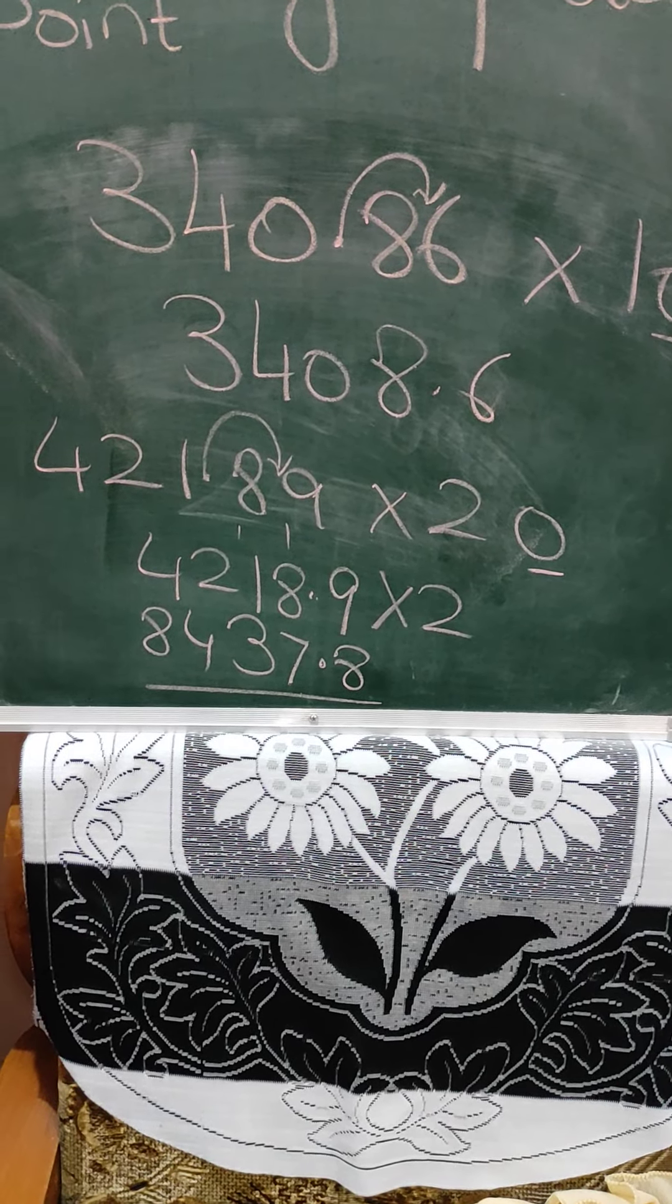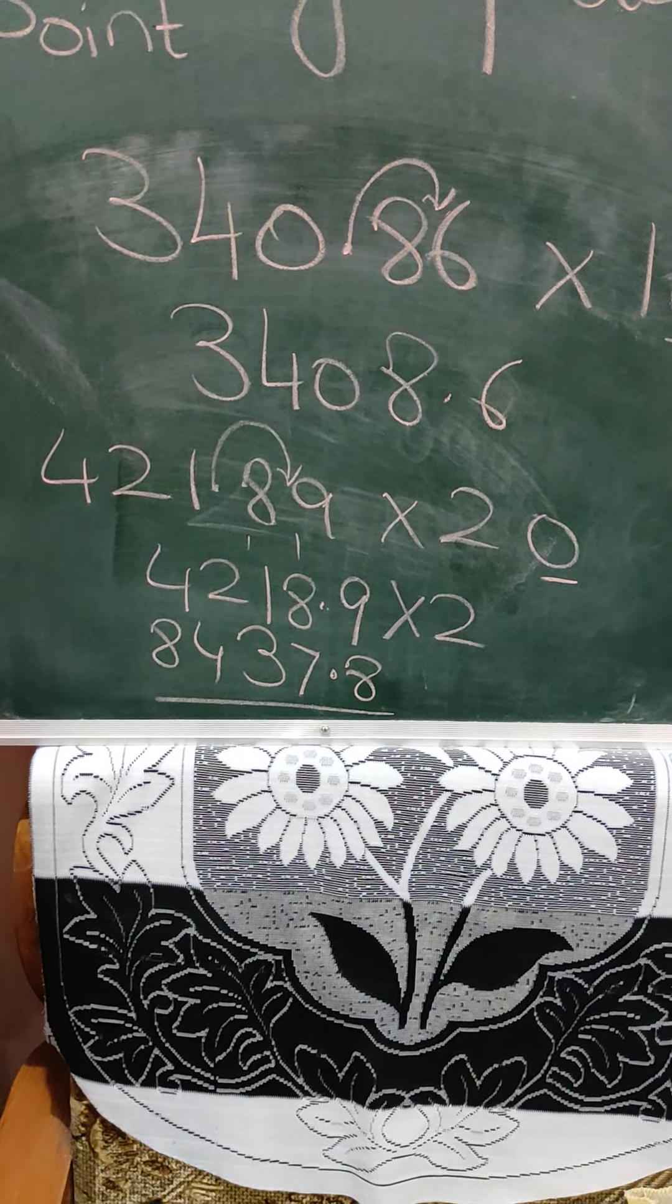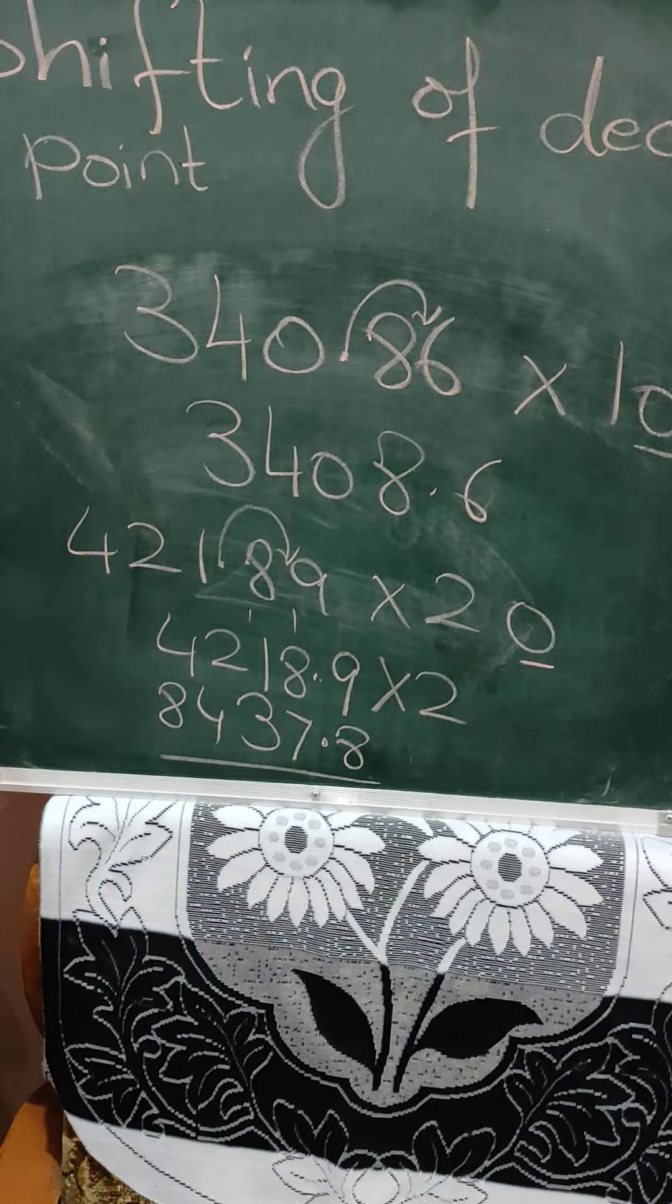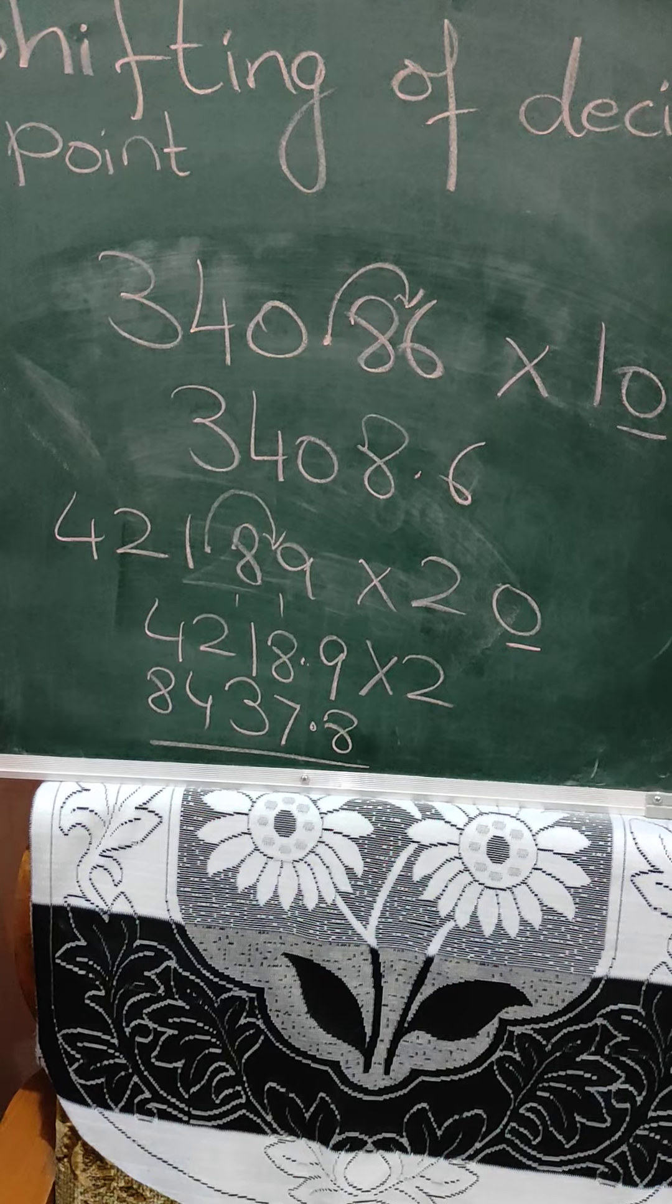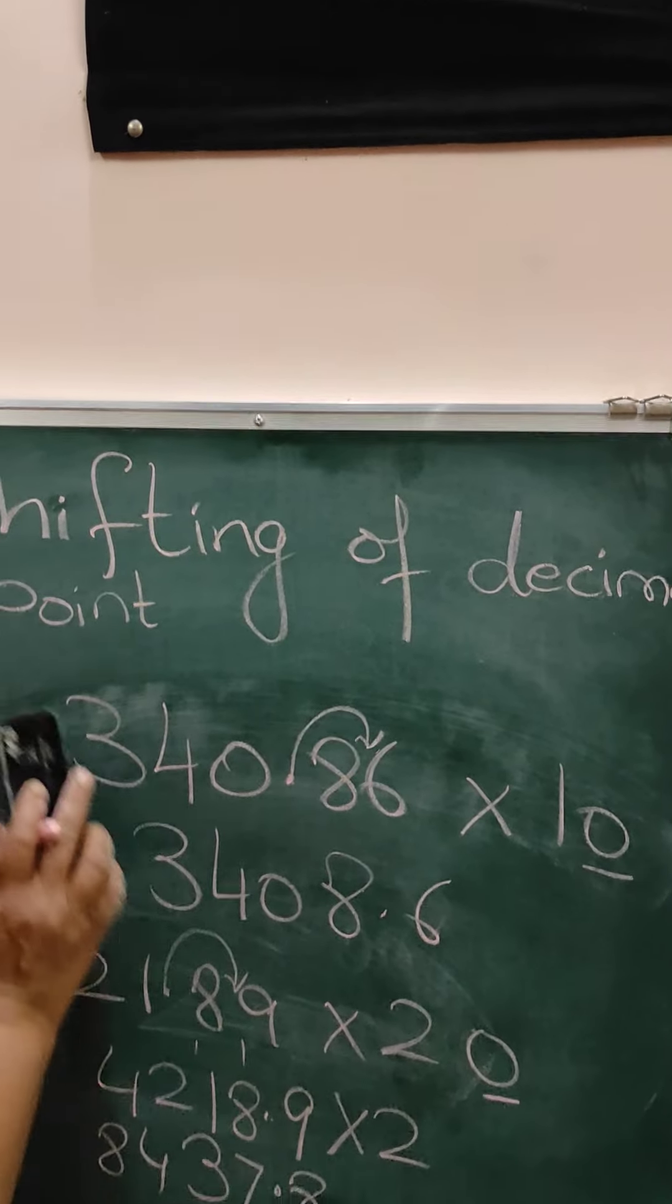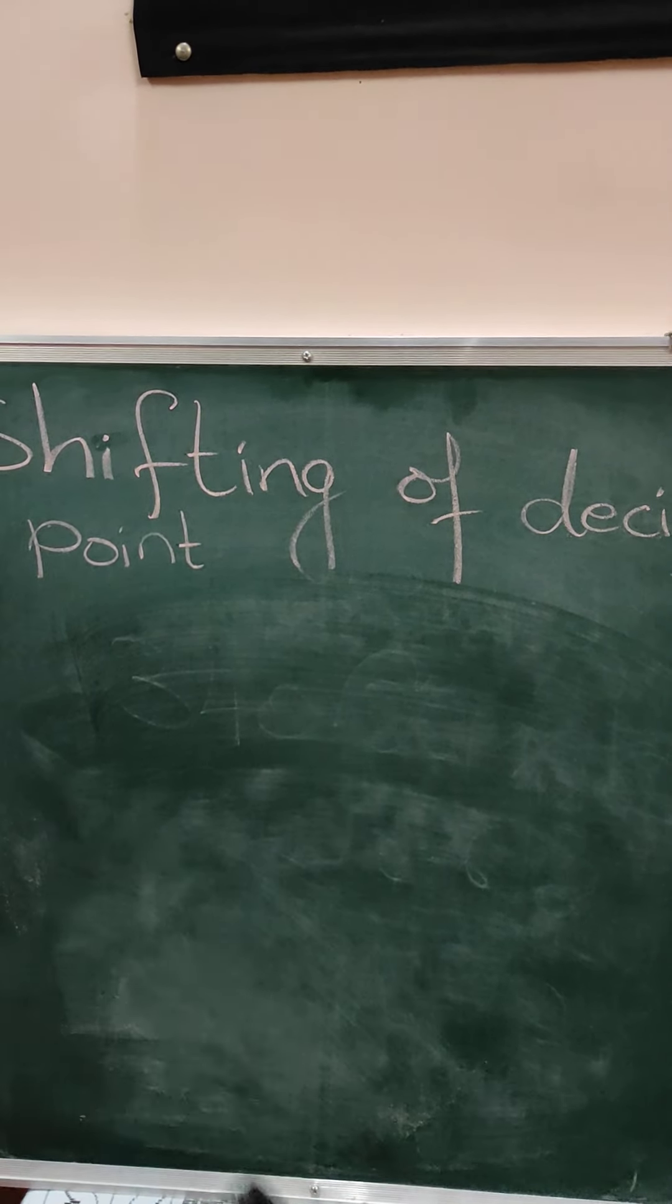Children, if you go on multiplying by zeros, the answer may become wrong. In school, we have seen many children doing wrong sums only because they don't know this simple magic of shifting of decimal point. We will take many more examples. Children, learn this. It is very, very useful.